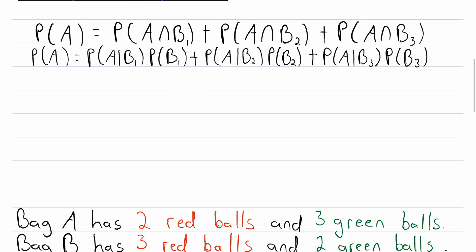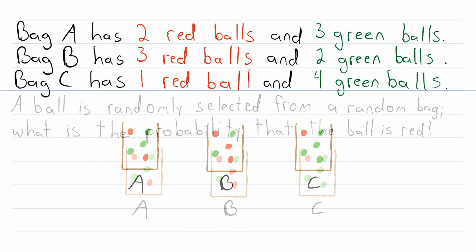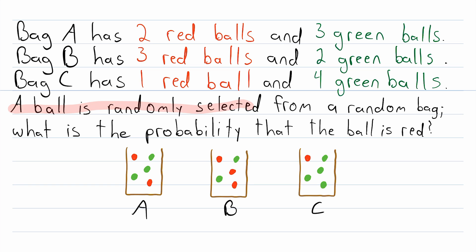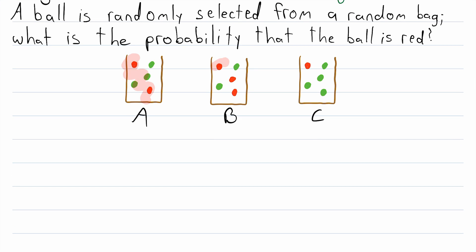With all of that said, let's move on to our actual example. We've got three bags — bag A, bag B, and bag C — and they each have a different number of red balls and green balls. Here's the question: a ball is randomly selected from a random bag. What's the probability that the ball is red? This seems like it could be a pretty complicated problem, because the probability of selecting a red ball depends on the bag that is chosen, and we don't know what bag is chosen.